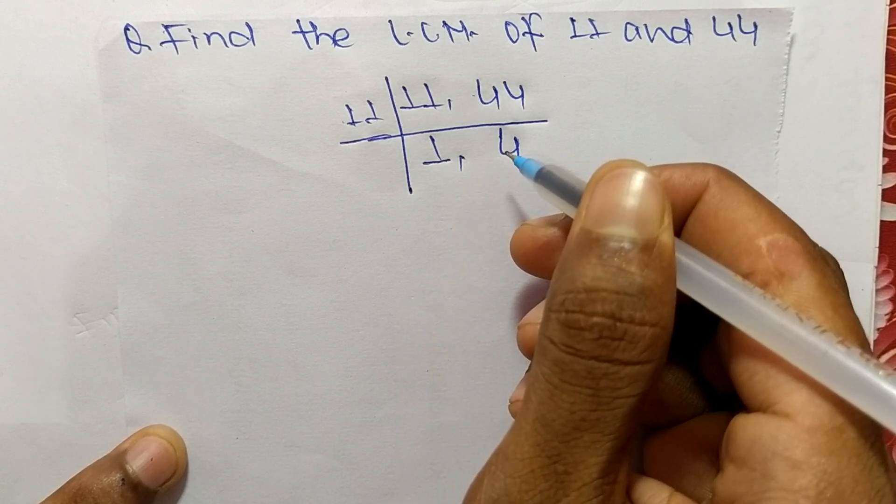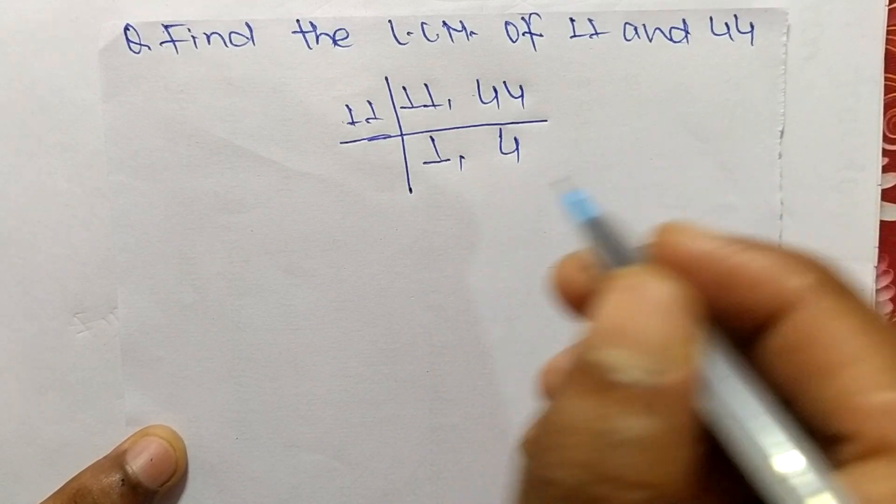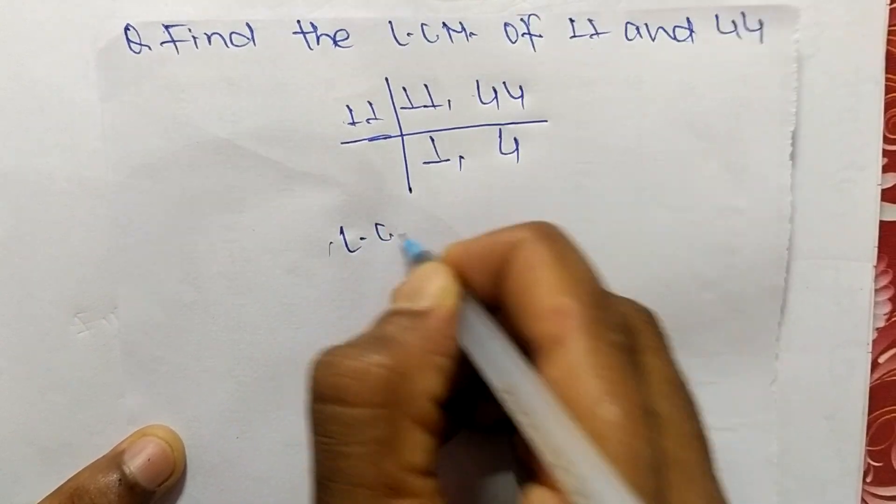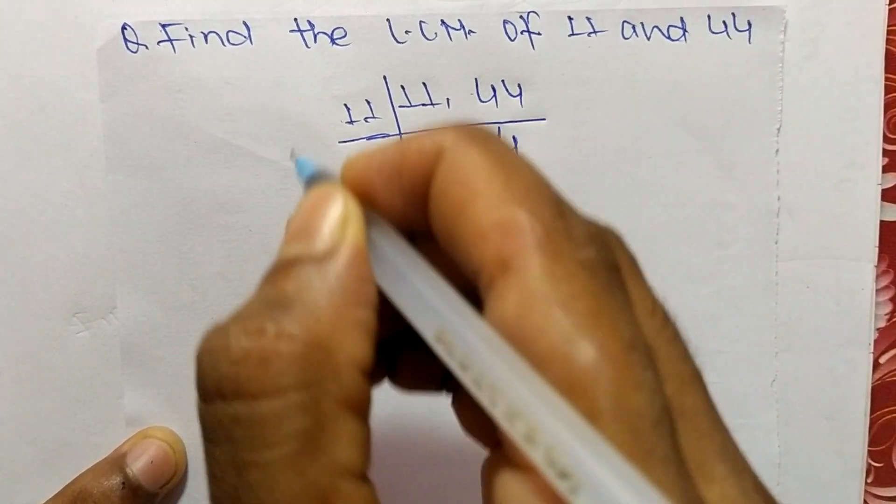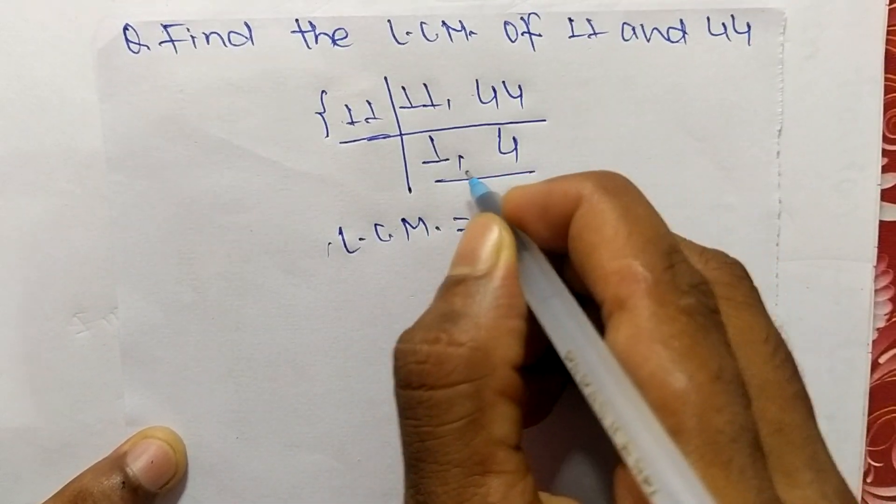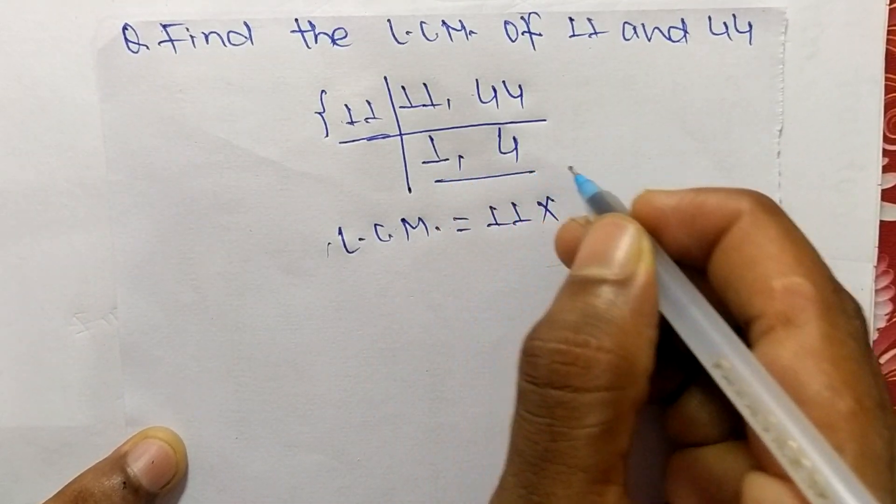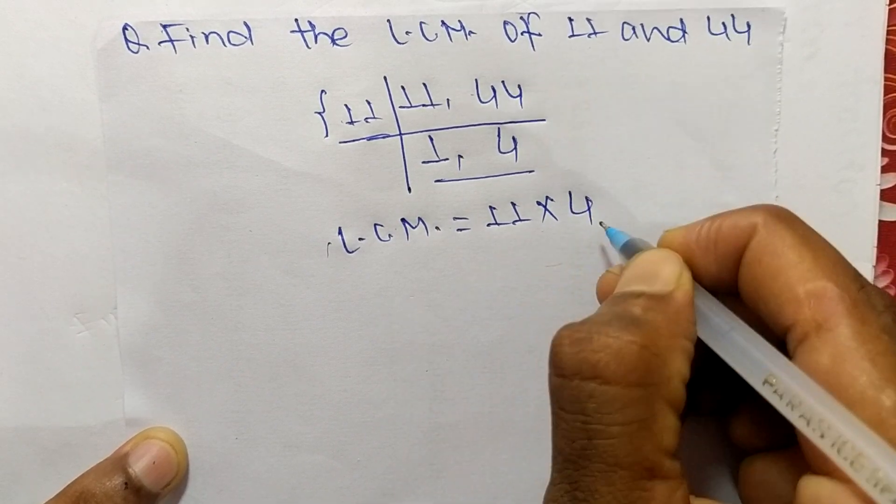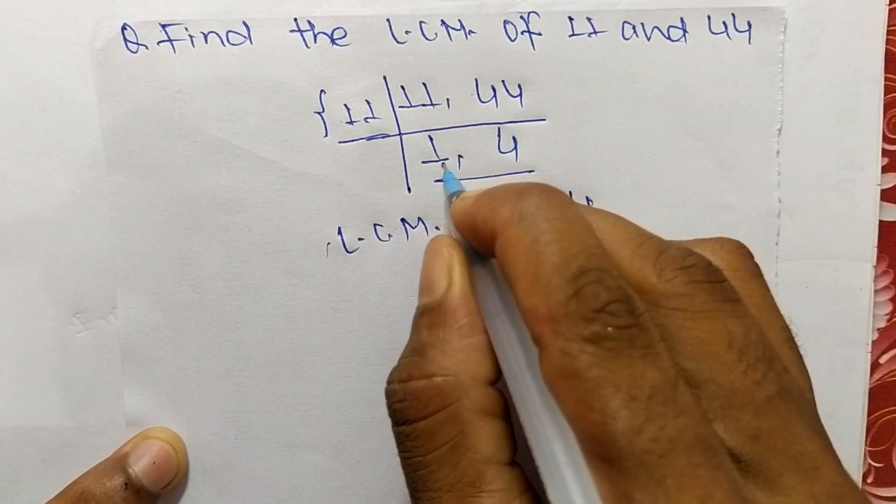1 and 4 are not exactly divisible by the same number, so the LCM is equal to, from this part it is 11, and from this part we have 1 and 4, but we take here only 4 and we neglect 1.